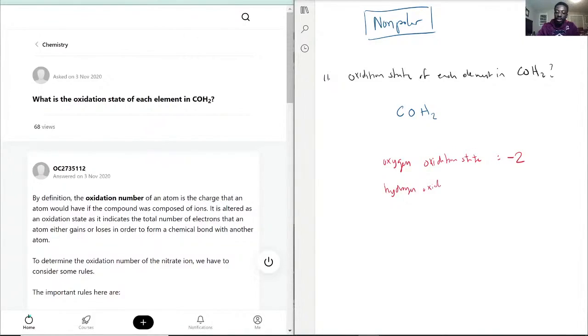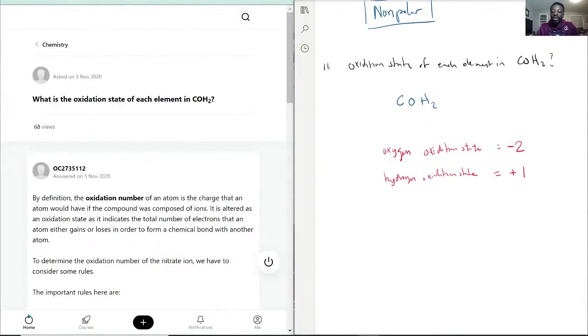Hydrogen oxidation state is typically plus one. The only way oxygen is not minus two - it'll be minus one - is when we have H2O2. In this case specifically, oxygen is minus one and hydrogen is still plus one.